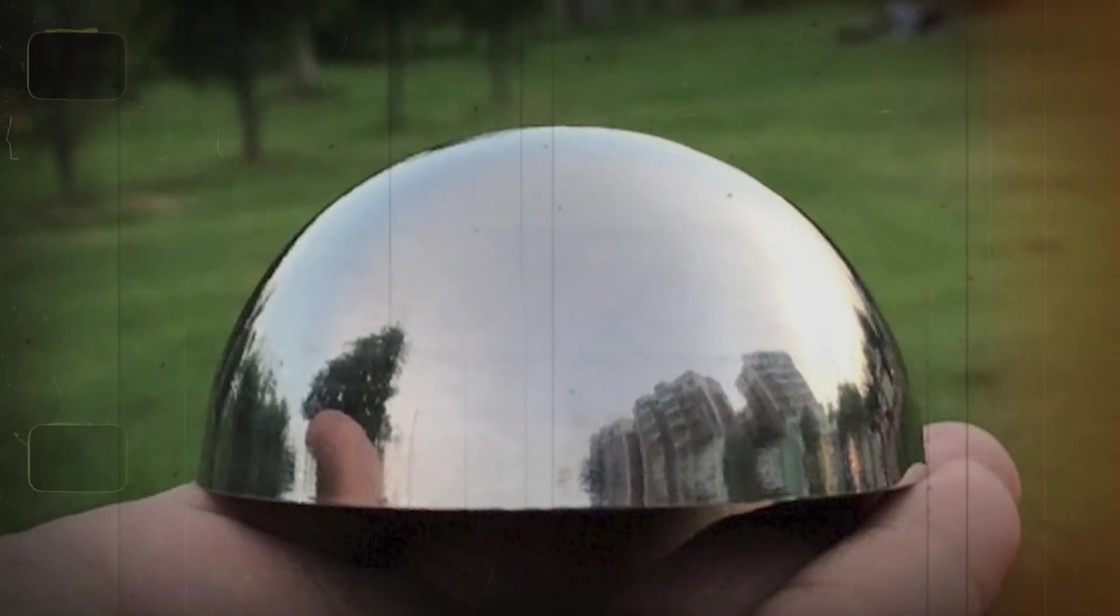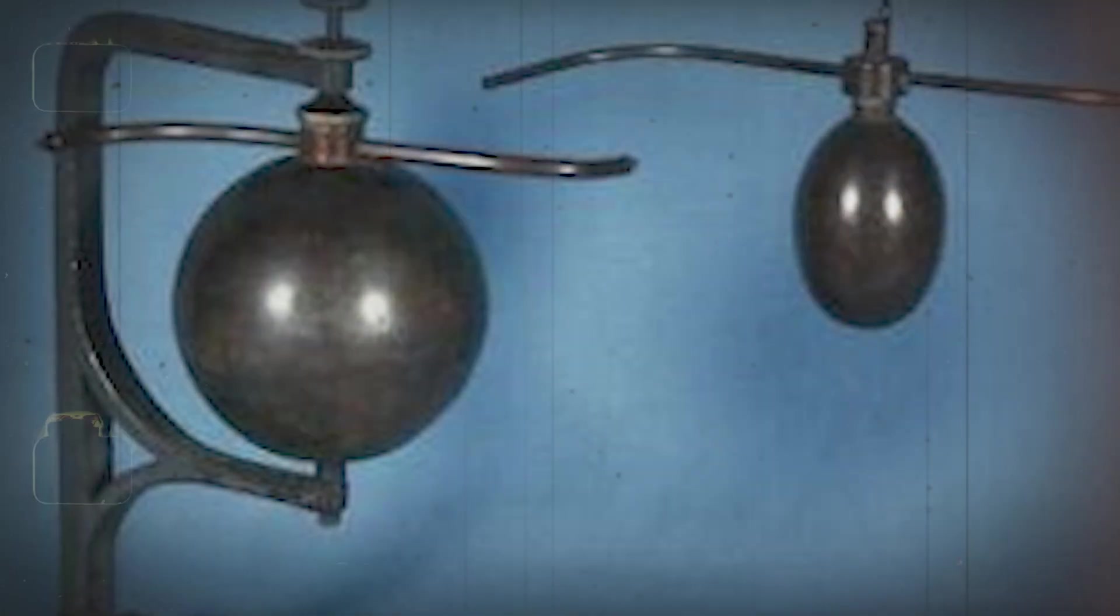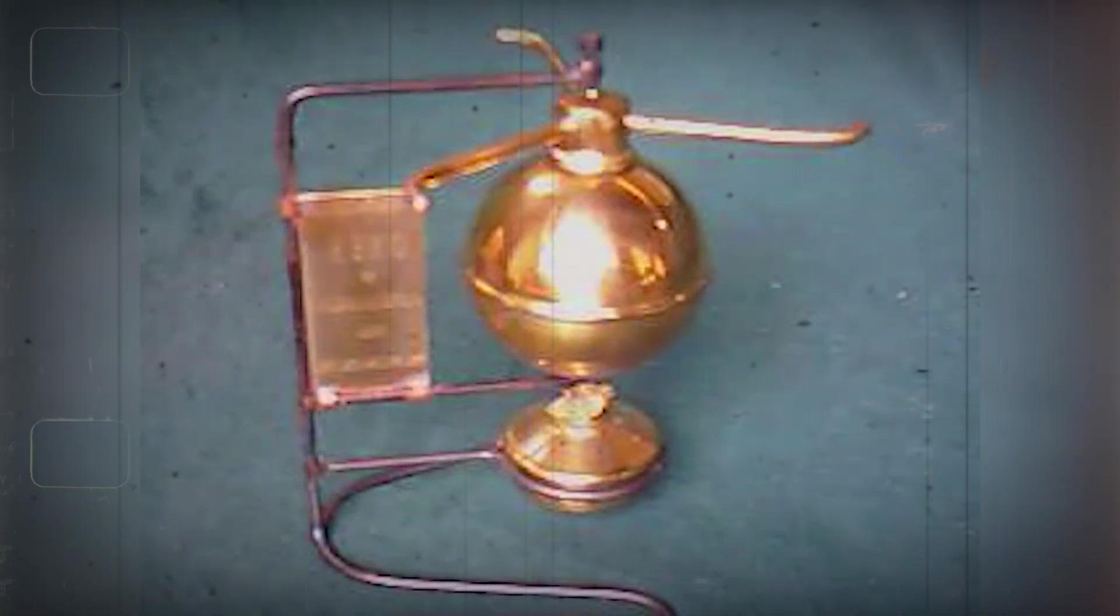It consisted of a hollow metal sphere mounted on a pair of hollow tubes. The tubes connected the sphere with a water-filled cauldron. When the cauldron was heated, steam emitted from the boiled water entered through the tubes and entered the sphere. Then steam escaped on each side of the sphere through small bent nozzles, causing a reaction force that made the sphere spin.